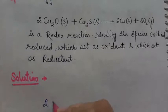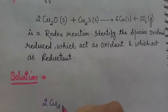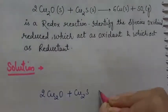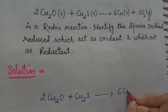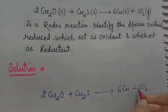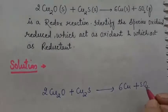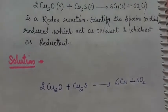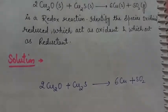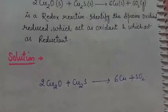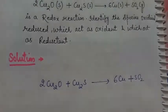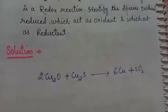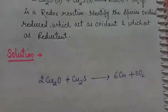So let us solve it. The reaction is: 2Cu₂O + Cu₂S → 6Cu + SO₂. Before we proceed, keep in mind that we have to calculate the oxidation state of each atom or element in every molecule.